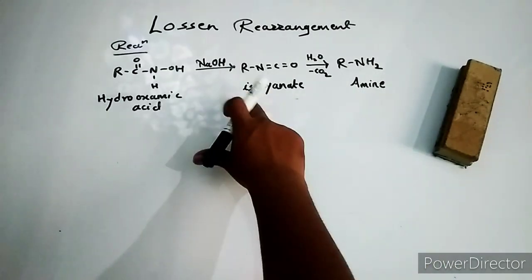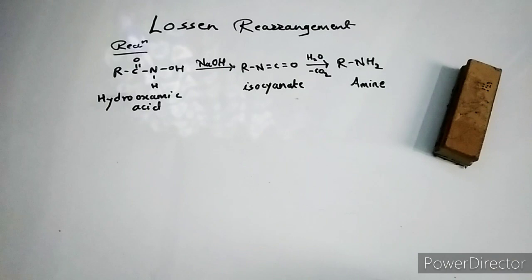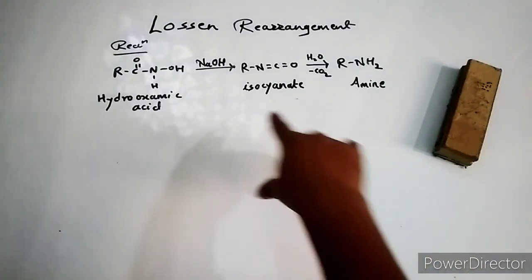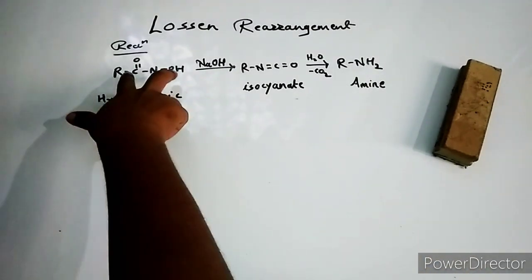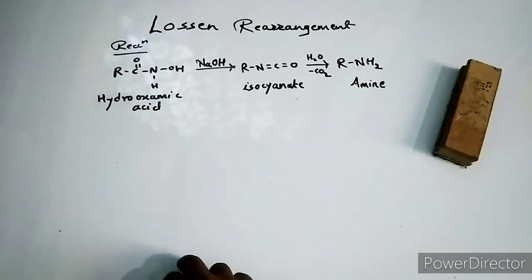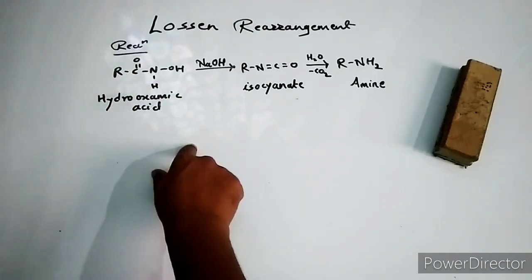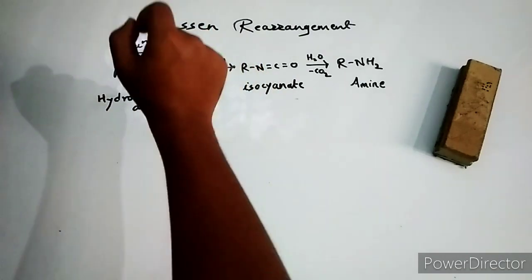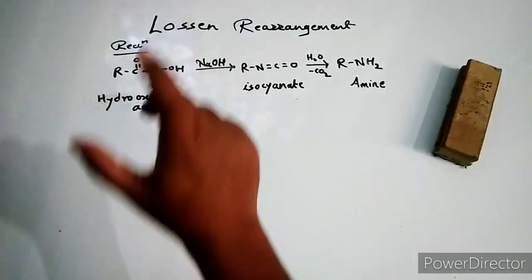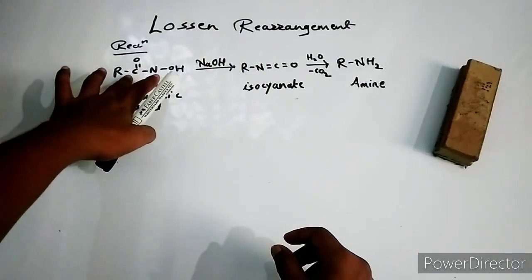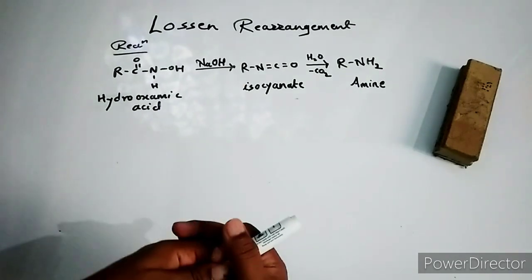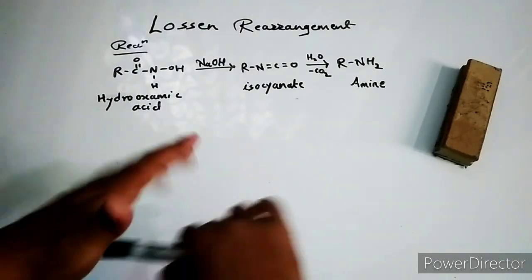The product forms by the formation of alkyl isocyanate. Before going to the mechanism, you must see how these hydroxamic acids are prepared. To prepare hydroxamic acid, acid chlorides are treated with hydroxylamine in presence of a base to give you hydroxamic acid. Now we are going to see the mechanism.